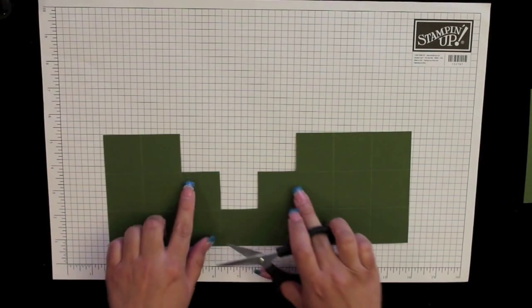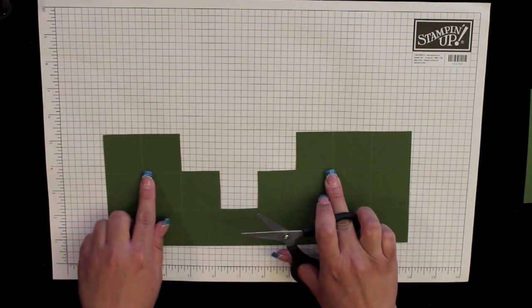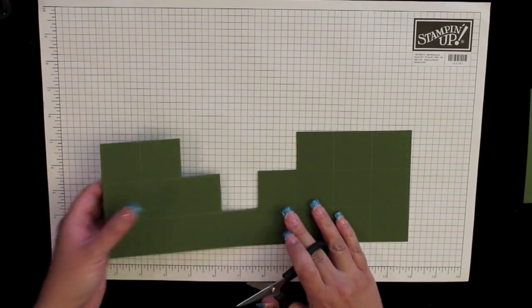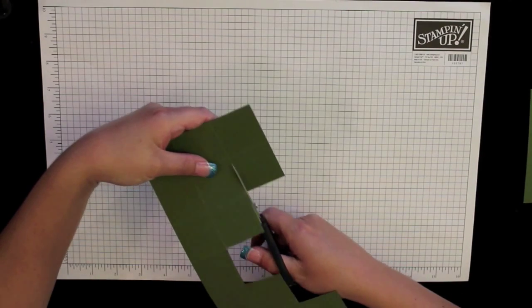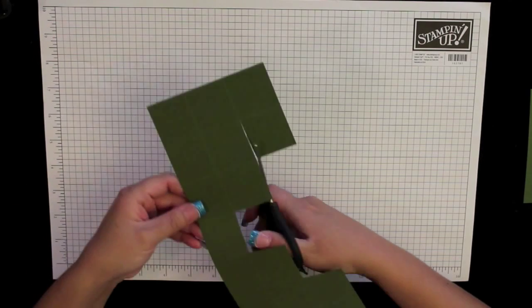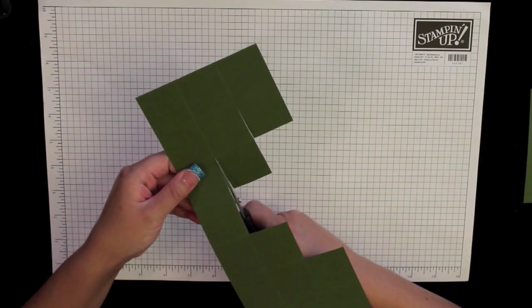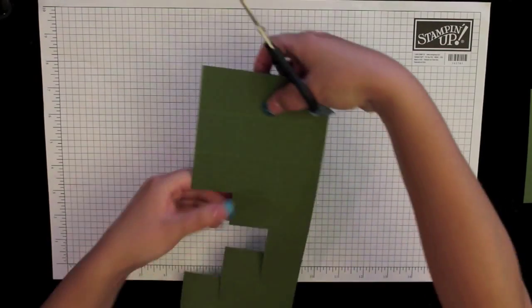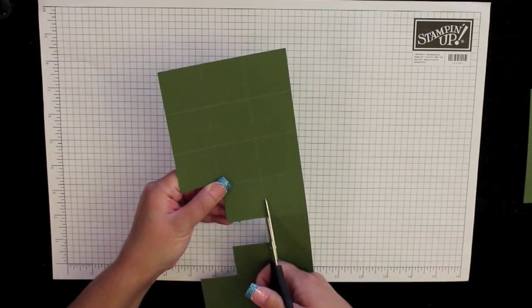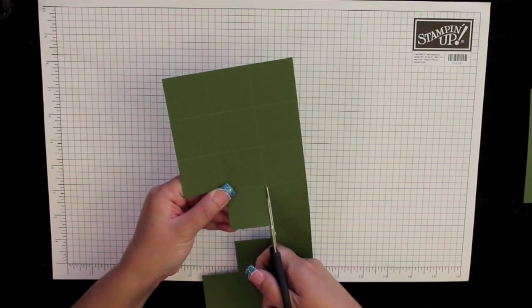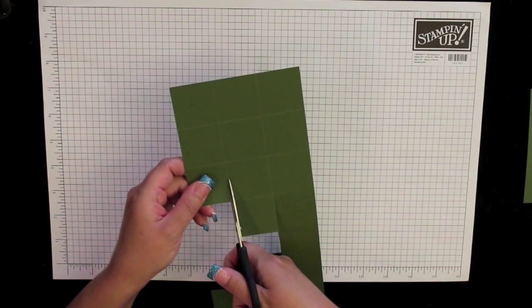Now again, where we cut these out, we're going to cut slits on either side and down here as well. One there, one here, one on that side and one on the top row.